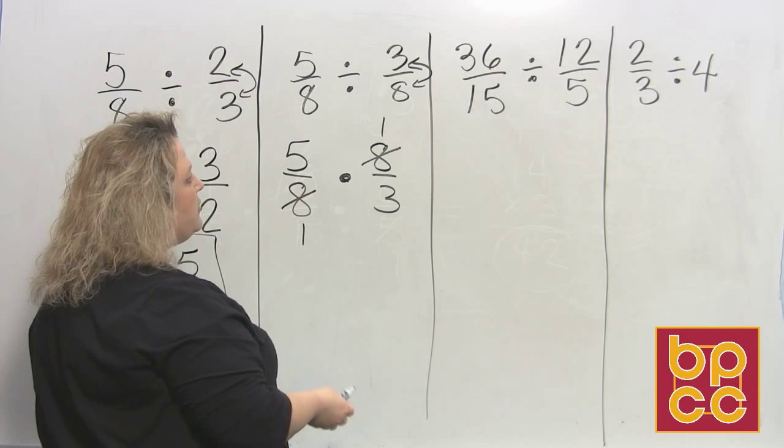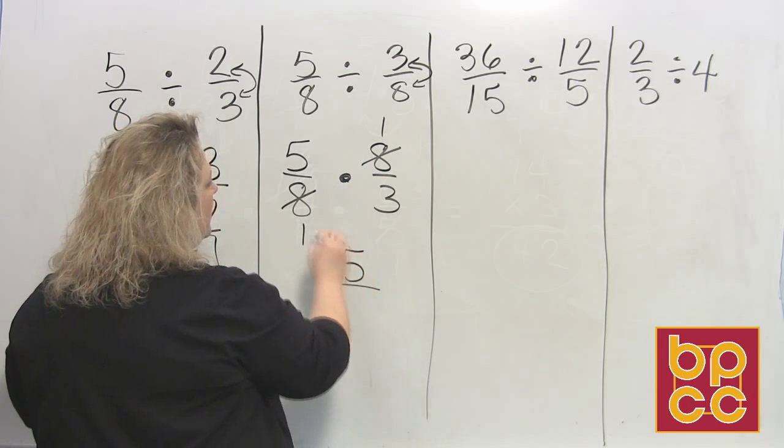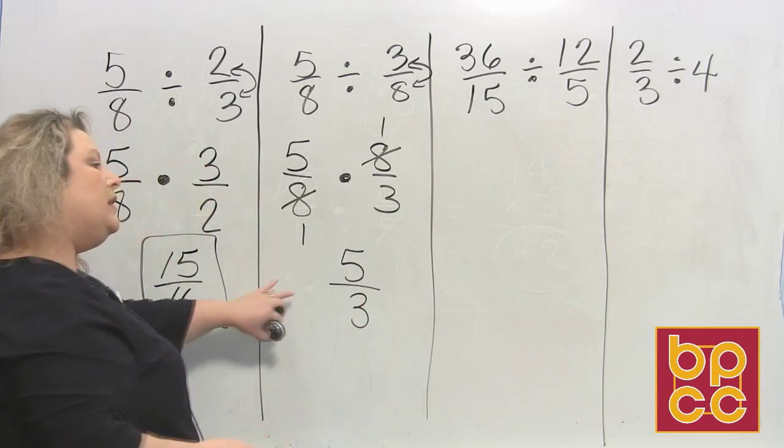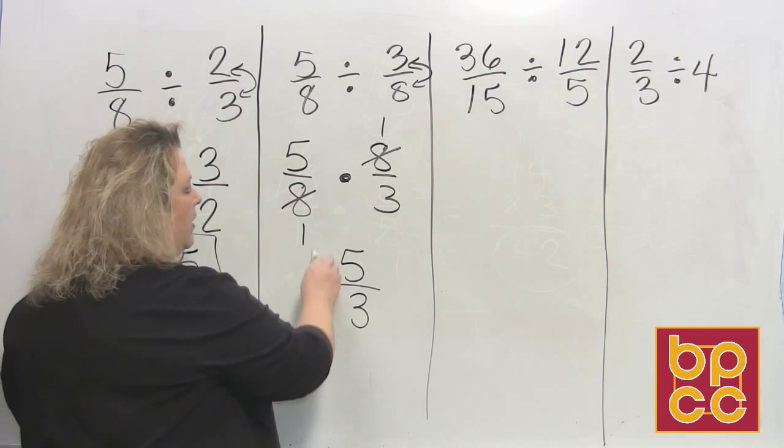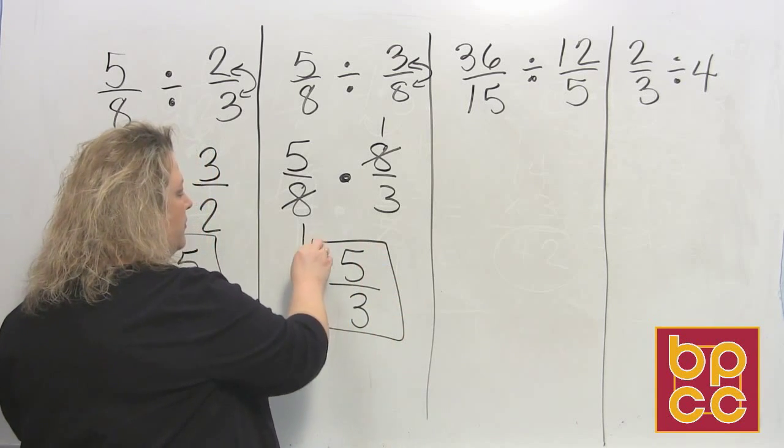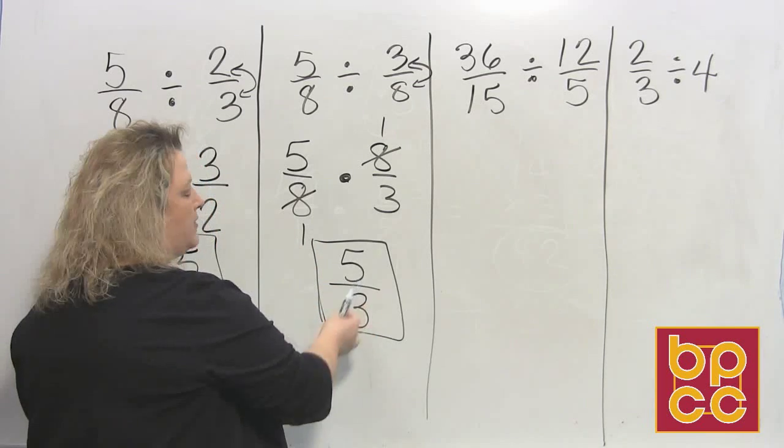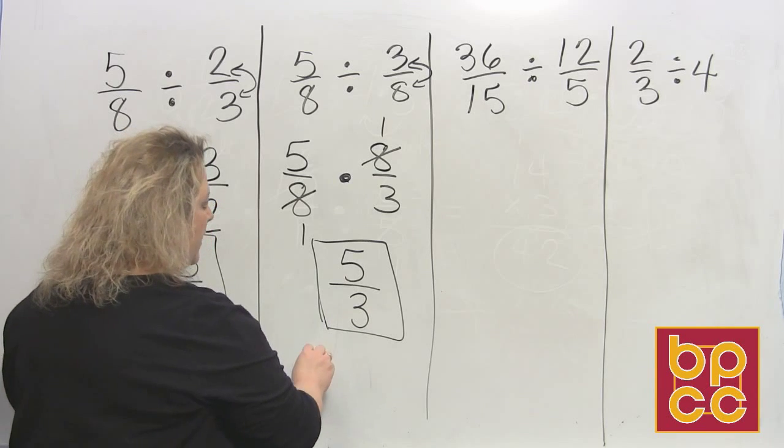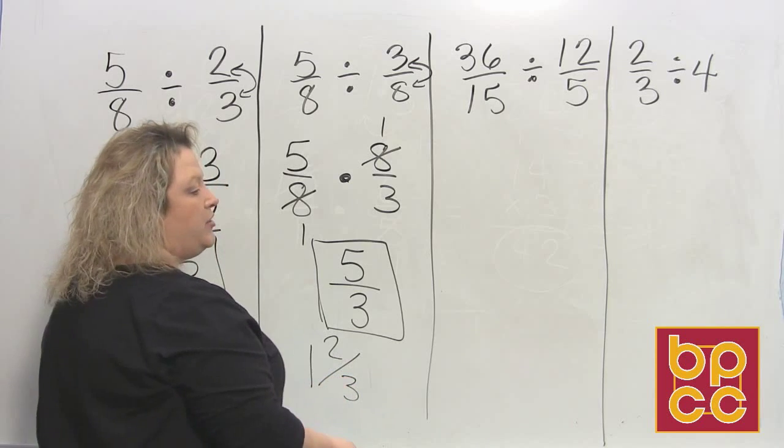Now I do multiplying fractions is no problem. Top times top, 5. Bottom times bottom, 3. Sometimes you can leave it like this, 5 thirds. But remember, if you are going to talk about measuring anything, you want to make sure that you know how to turn that into a mixed number by saying 3 divides into 5 one time and it leaves 2 left over. So that would be 1 and 2 thirds if you want to change it to a mixed number.